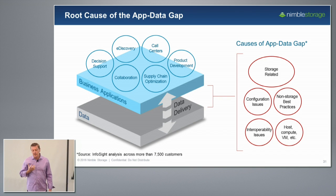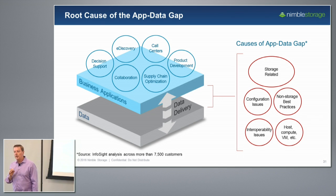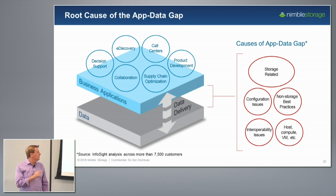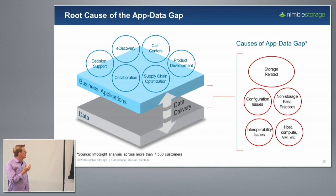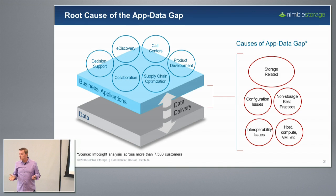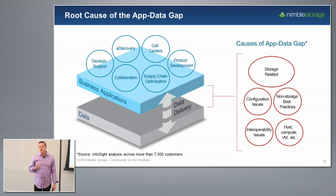We looked at 7,500 customers and examined all of the cases we've dealt with over a several-month period to really study where that gap is coming from. It turns out it's related to things like storage, networking, host side issues, virtual machine issues, configuration issues, and sometimes interoperability issues between applications and other things in the network, operating systems, or storage — a whole plethora of things that ultimately cause that app data gap and that potential slowdown or non-delivery of data impacting your business.